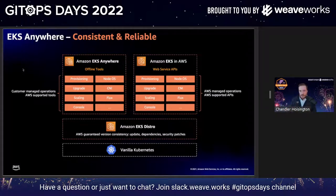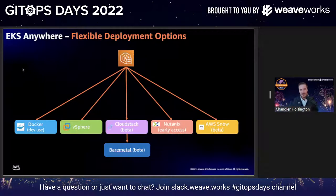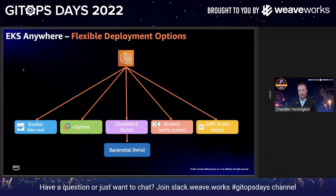Last year when we stood up here on our virtual stage, we were announcing EKS Anywhere, but it was only available on vSphere, with Docker as an optional for dev purposes only. So it didn't really make sense to call it 'EKS Anywhere' at that time. But it makes a lot more sense today because there are a lot more ways you can run EKS Anywhere — mostly in beta form — and most of these things are dropping in the next one to three months.